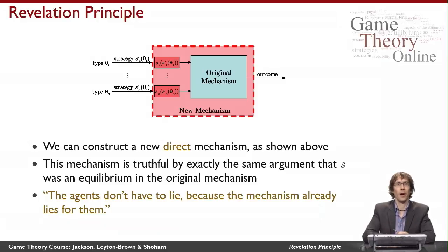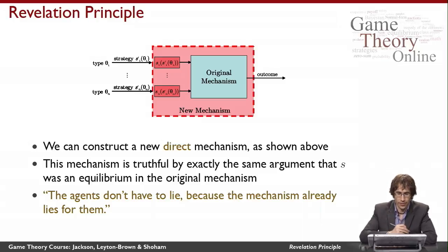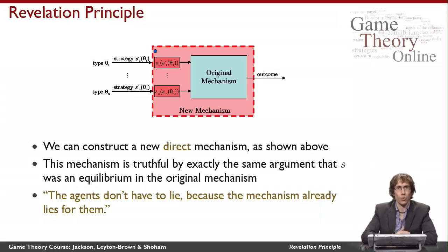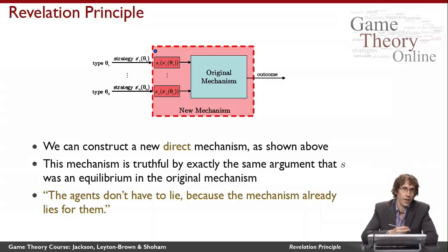Here's the punchline. I want to show that I can make a new direct mechanism which is truthful. I take the original mechanism and embed it in this new mechanism. I make a new mechanism whose action space is the same as the type space — so I ask each of the agents to tell me what their type is. The agents can do whatever they want; they don't necessarily tell me the truth, but they tell me something.